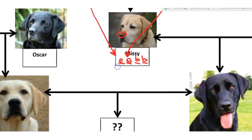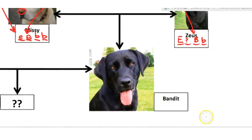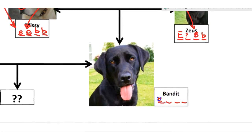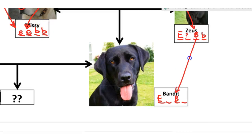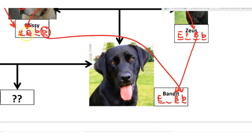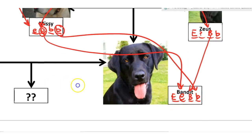Let's figure out what Bandit is. Bandit is black, so he must have at least one dominant E gene and at least one big B gene. Looking at his parents: Zeus could give him a big B or a little b, but Missy could only give him a little b. So the big B must have come from Zeus, and Bandit must also have a little b from Missy — making him big B little b. Missy can only give a little e, so Bandit's second E gene must be recessive, making him a heterozygous black — big E little e, big B little b.